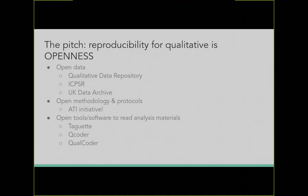What's been sorely lacking in the qualitative space and is really important for reproducibility are open tools. If you get an Atlas TI file but don't have $600 to download Atlas, this is just as big a problem for reproducibility as any of the others. Luckily there are a few things filling the space: Qualcoder, which works for Windows and Linux; Qcoder, which is in our library for qualitative analysis — I particularly like it for mixed methods where I need some qualitative analysis and then maybe a quantitative component as well. And full disclosure, I work on Tag It, which is just really simple — upload text and tag it.